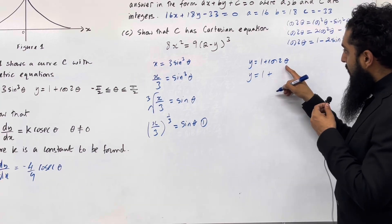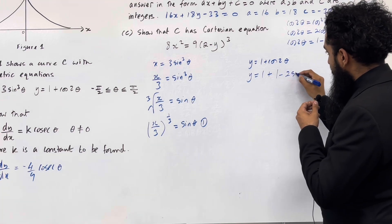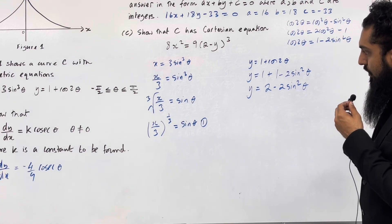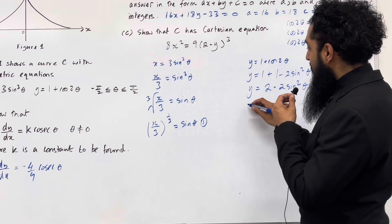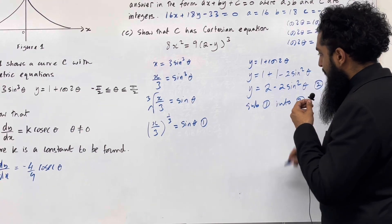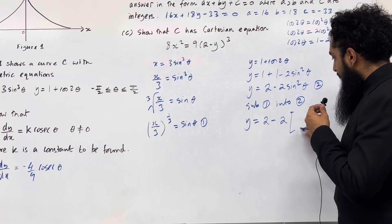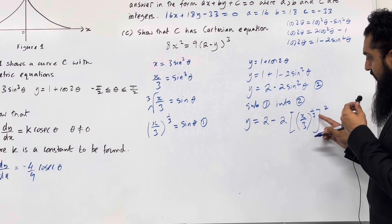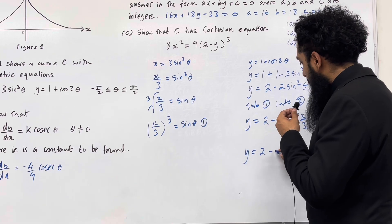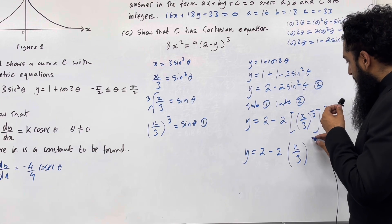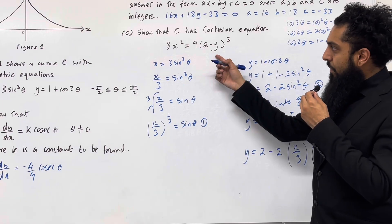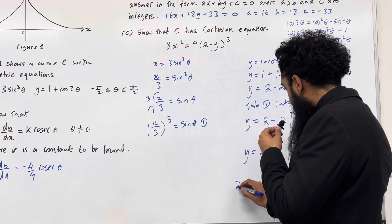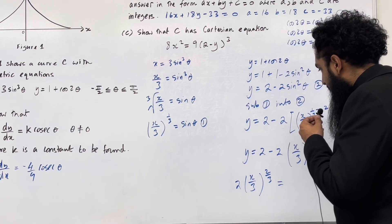For the y parametric, I write y equal 1 plus, replacing cos 2 theta with 1 minus 2 sine squared theta. Simplifying, y equals 2 minus 2 sine squared theta — call this equation 2. Now substituting equation 1 into equation 2: y equals 2 minus 2 lots of x over 3 raised to the power 1 third, squared. Multiplying the inside and outside powers gives y equals 2 minus 2 lots of x over 3 raised to the power 2 over 3. Rearranging, 2 lots of x over 3 raised to the power 2 over 3 equals 2 minus y.